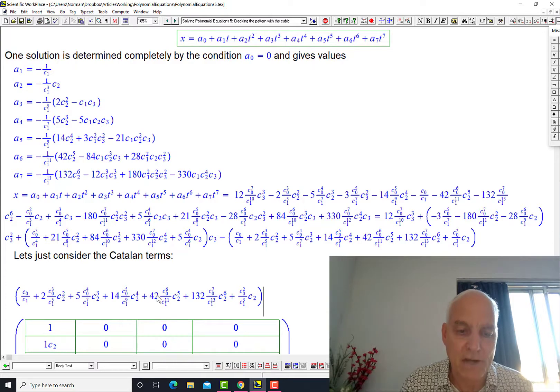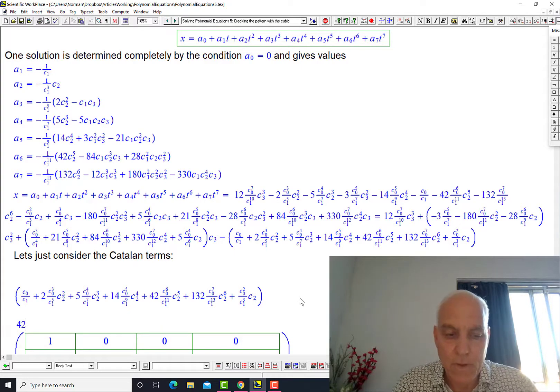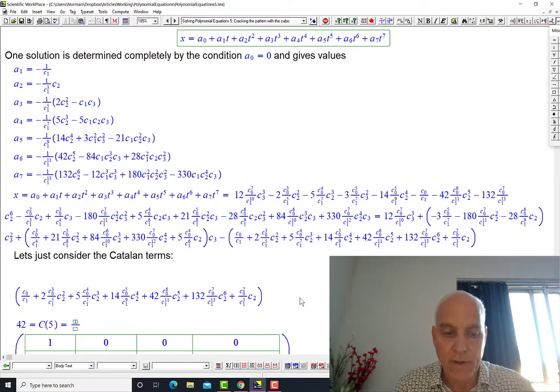Because we know what they are. We know what the actual values of these things are. These are these Catalan numbers, which are the central binomial coefficients, 2n choose n, divided by n plus 1. So, for example, this 42. Let's have a look at it here. So 42 was the fifth Catalan number.